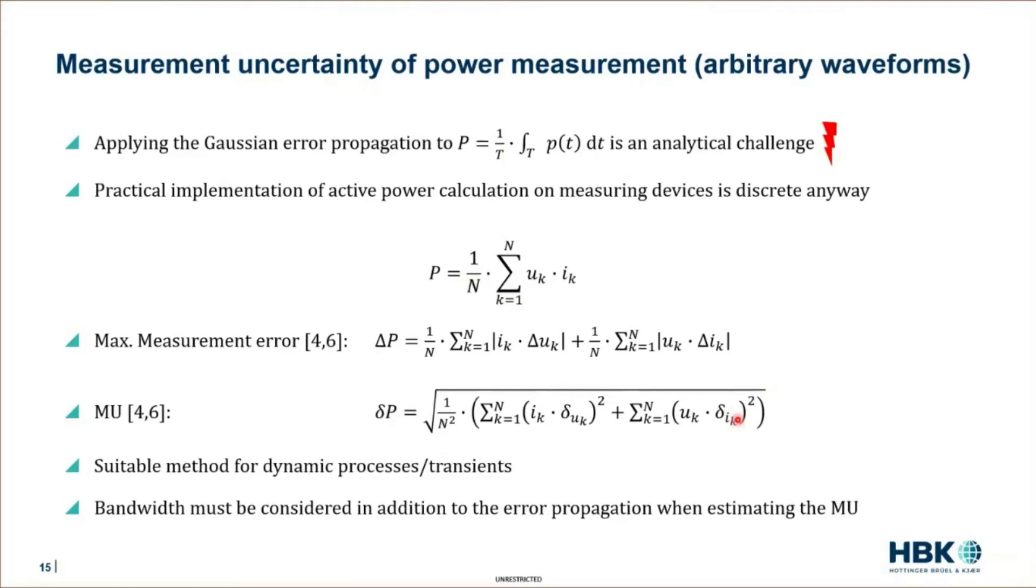What is important here to state as well is that this formula does so far not contain bandwidth effects. So sensors, which are of course limited in bandwidth somewhere and also filter properties, for example. But it's possible to consider this in addition as well. And now we see that we have also for dynamic signals measurement uncertainty propagation formula.